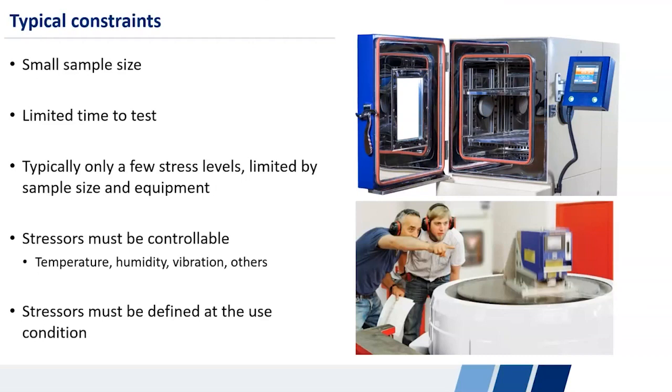So I've seen examples where people will want to design an accelerated test using something like chemical corrosiveness or chemical harshness. They know that if they increase, if they apply some really harsh chemical solution to their part, they'll get failures faster, but they don't know what the levels of that, the equivalent levels of that chemical solution are in the field. And that means that you can't make a projection back to the use condition. You can't make those reliability statements that were the goal all along.